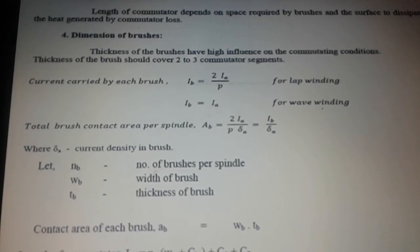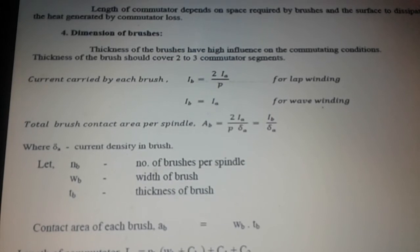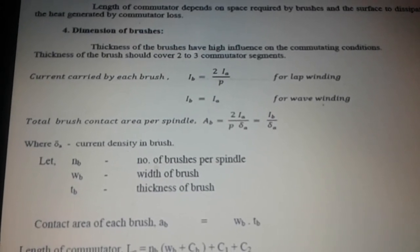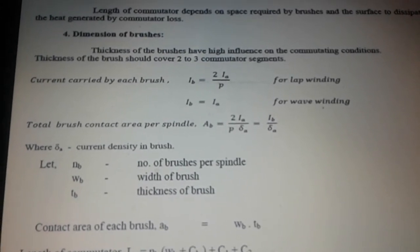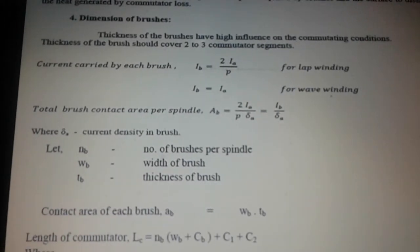NB is the number of brushes per spindle, WB is the width of the brush, and TB is the thickness of the brush. The total contact area of the brush is WB into TB.